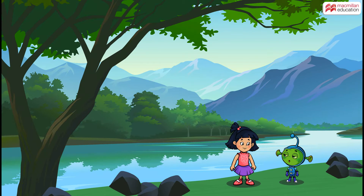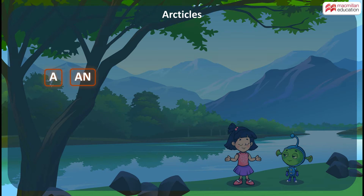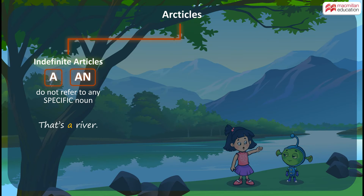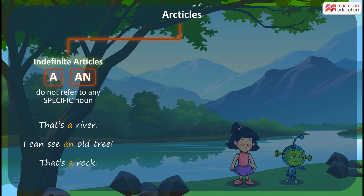And I thought I knew all about A and AN. Then let me tell you something more. A and AN are called indefinite articles because we use these when we do not wish to refer to any specific naming words. For example, that's a river, and I can see an old tree. I am not talking about any particular river or tree, so I say a river and an old tree. So I can say that's a rock.